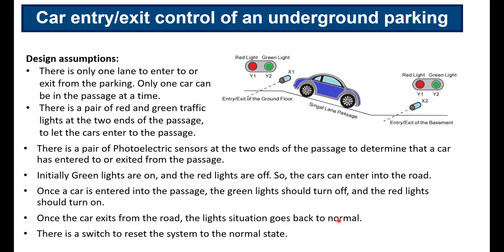Now that we know the basic concepts behind R_TRIG and F_TRIG, let's follow an example. We have a scenario where there is a parking at the basement with a passage for cars to enter or exit. The passage is a single lane — only one car can move in one direction at a time. If one car is entering, another car cannot exit at the same time. These are the assumptions: only one car can be in the passage at a time.